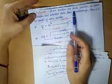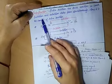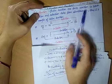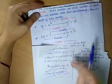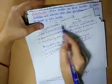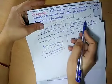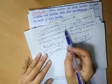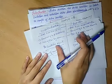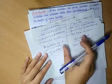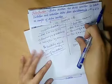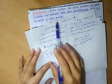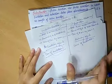Redox reactions are those reactions in which oxidation and reduction take place simultaneously. When both oxidation and reduction occur together in a reaction, we call that a redox reaction.